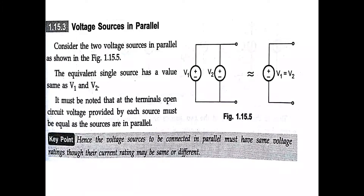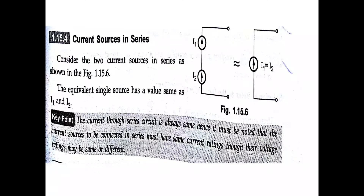The polarity of the equivalent source is the same as that of the greater of the two sources. For voltage sources in parallel: the equivalent single source has the same value, so V1 must equal V2. It must be noted that the open-circuit terminal voltage provided by each source must be equal when sources are in parallel. V1 and V2 will have the same polarity and the same voltage rating, though their current ratings may be same or different.